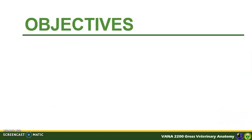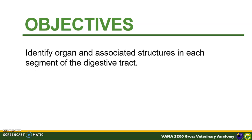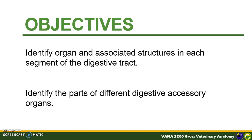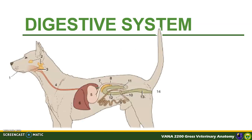At the end of this module, you should be able to identify the organ and the associated structures in each segment of the digestive tract, and identify the parts of the different digestive accessory organs.